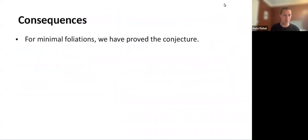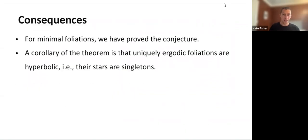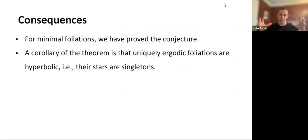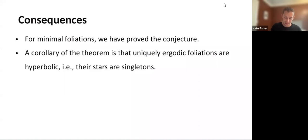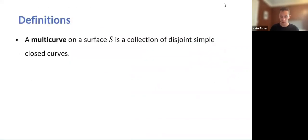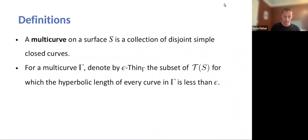Combining our result with Carlson's, for minimal foliations we have equality between zero sets and stars. For non-minimal foliations there's still work to do, but we've partially proved the conjecture. A corollary is that uniquely ergodic foliations have zero sets which are singletons — the only foliation in their zero set is themselves. Since uniquely ergodic foliations are also minimal, and their zero sets and stars are equal, the stars of uniquely ergodic foliations are singletons, making them hyperbolic points in the star structure.